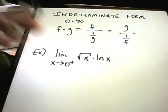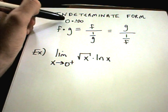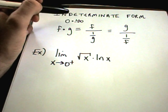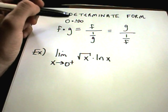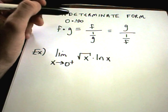The next type of indeterminate form we'll talk about is of the form 0 times positive or negative infinity, or vice versa, positive/negative infinity times 0.